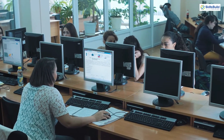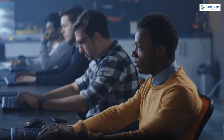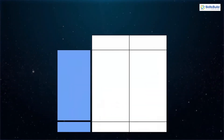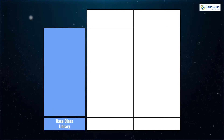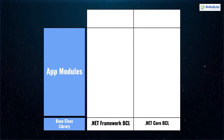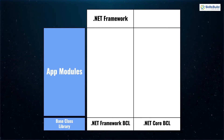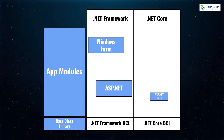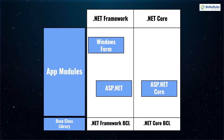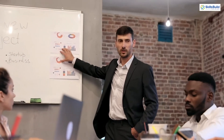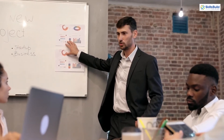Even Microsoft had to face this problem because whenever they had to develop a new platform, they had to create a new base class library for it. At the lower level we have a base class library, and above that we have app modules. In app modules we have different things: in .NET Framework we have Windows Forms and ASP.NET, and in .NET Core we have ASP.NET Core and UWP.